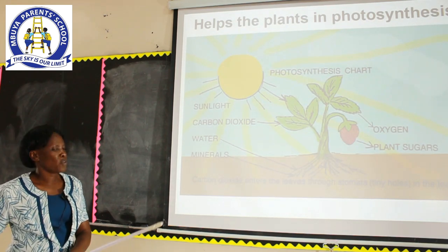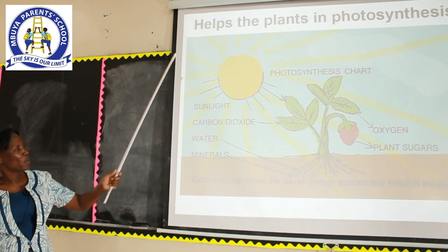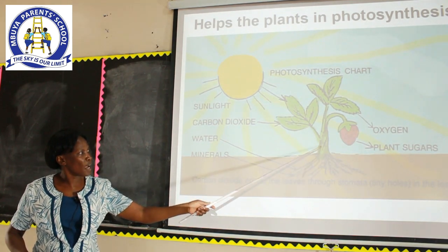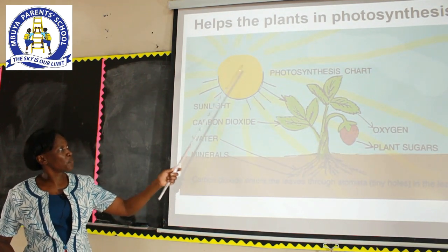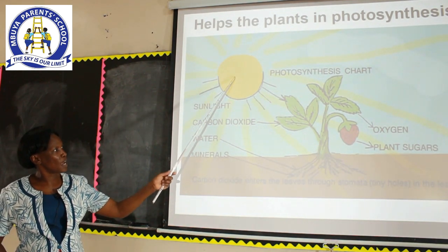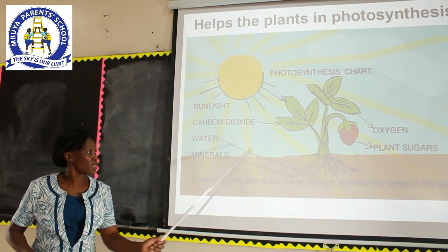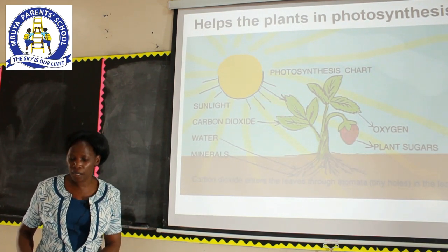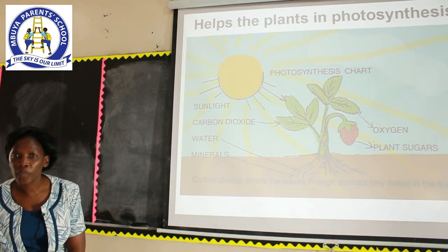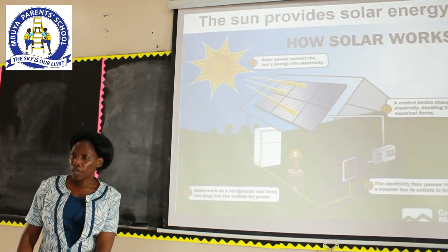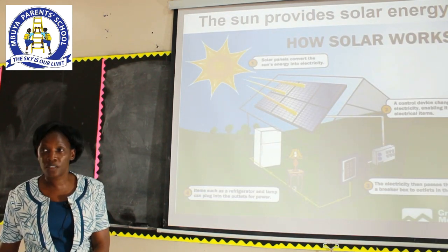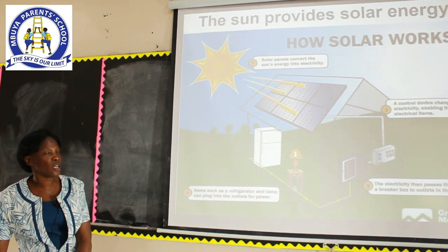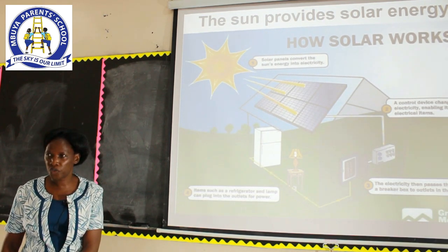Now, look at this diagram. We have the sun and the plant. This plant receives sunlight from the sun, which it uses to make its own food, which is then eaten by people. Furthermore, heat from the sun provides solar energy, and from solar energy we get solar electricity.